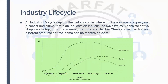We'll be discussing the industry lifecycle. Similar to the product lifecycle, we have different stages. The product starts at some point, then it grows, then there's maturity, and then decline. Similarly, when you talk about the industry as a whole, there is a startup, then it progresses, matures, and then declines. But there are more stages than the product lifecycle: startup, growth, shakeout, maturity, and decline.